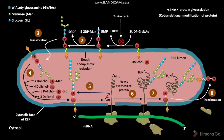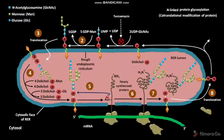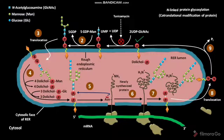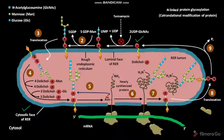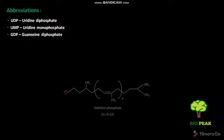In the next step, the dolicol pyrophosphate is converted into dolicol phosphate with the hydrolytic removal of a phosphate group as Pi. This is the ninth step of protein glycosylation. This newly formed dolicol phosphate is then available for another round of N-linked protein glycosylation. The enzymes involved in N-linked protein glycosylation are attached to either the cytosolic face or the luminal face of the RER. This is the structure of dolicol phosphate.